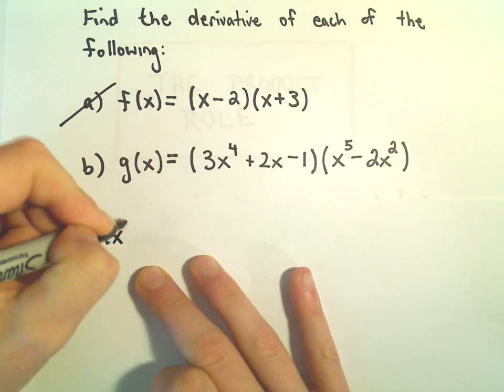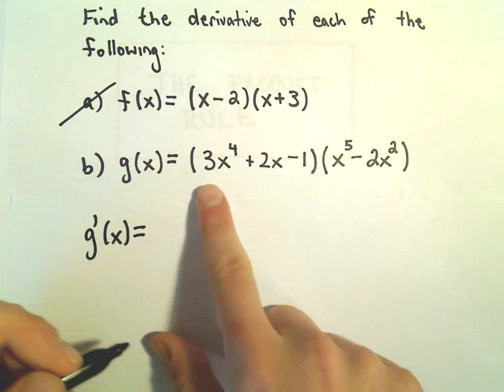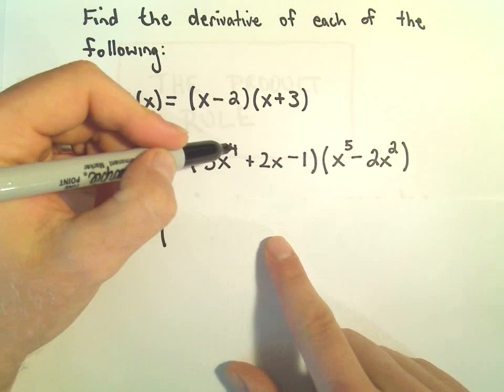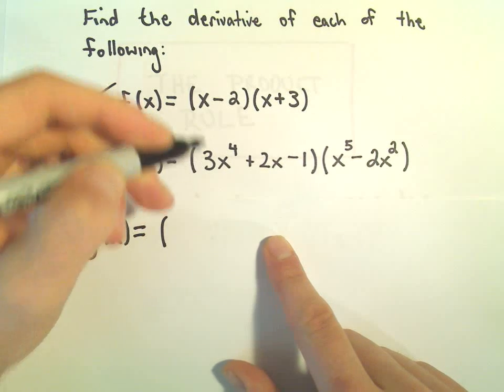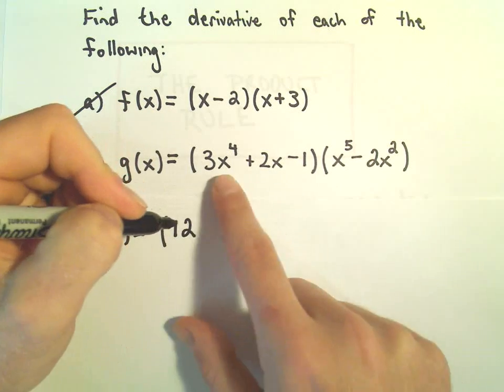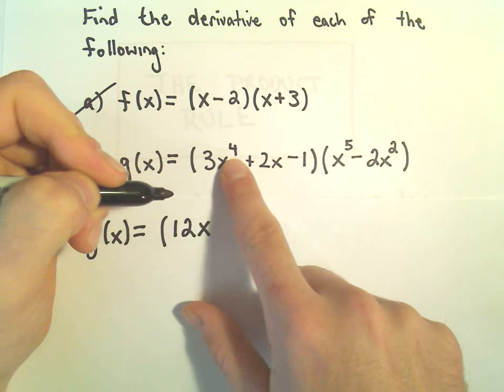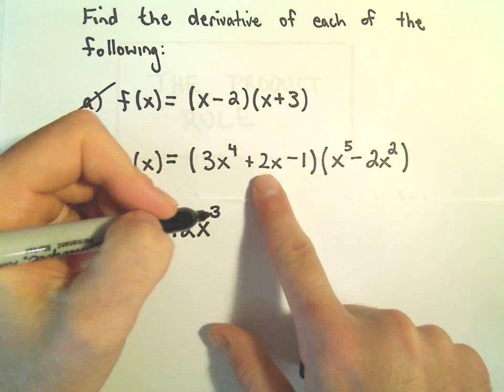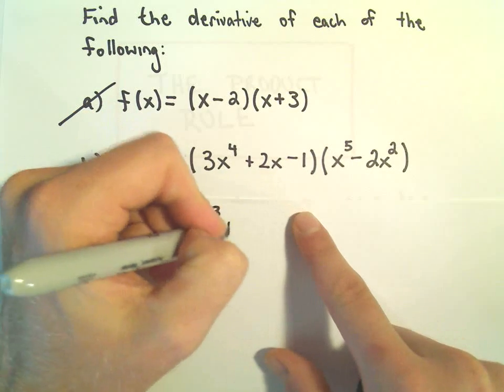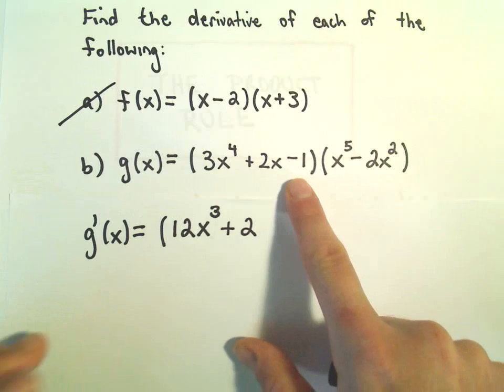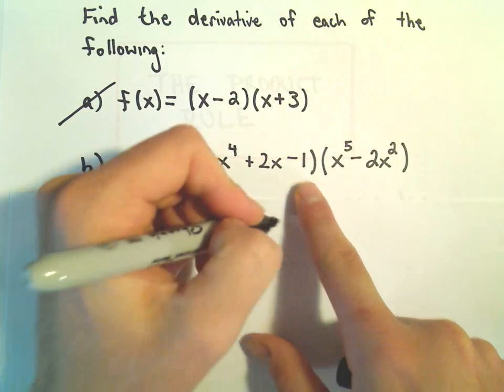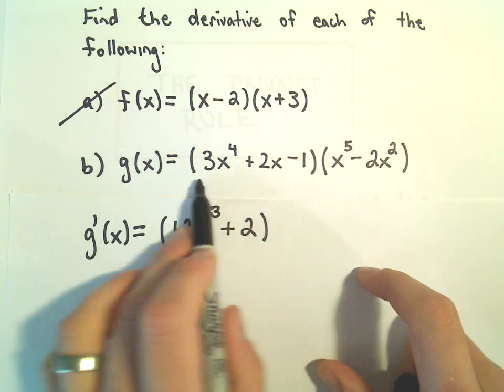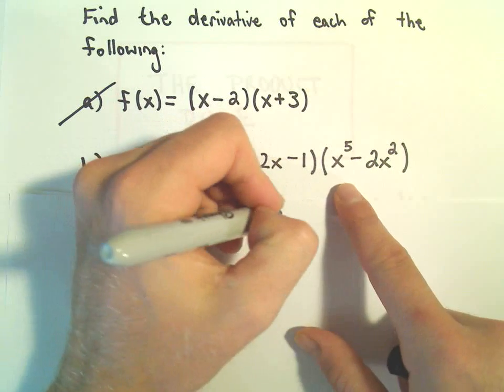So, if we take our derivative here, if I do the derivative of the first factor, the 4 would come out front and multiply by the 3, which gives us 12x. Then we take 1 away from our exponent, which gives us to the 3rd power. The derivative of positive 2x is just going to be positive 2, and the derivative of our constant negative 1 turns into 0. So we took the derivative of the first factor, we'll leave the second one alone.